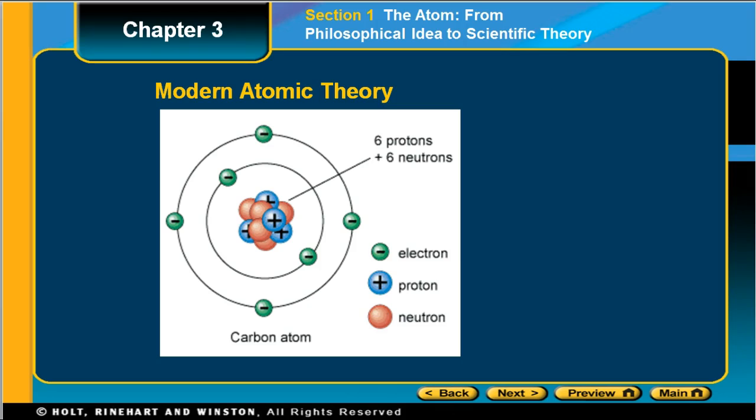In the rings, or energy levels, outside of the nucleus, you can see the placement of the electrons. In carbon, carbon is defined as having six protons, and carbon-12 has six neutrons.